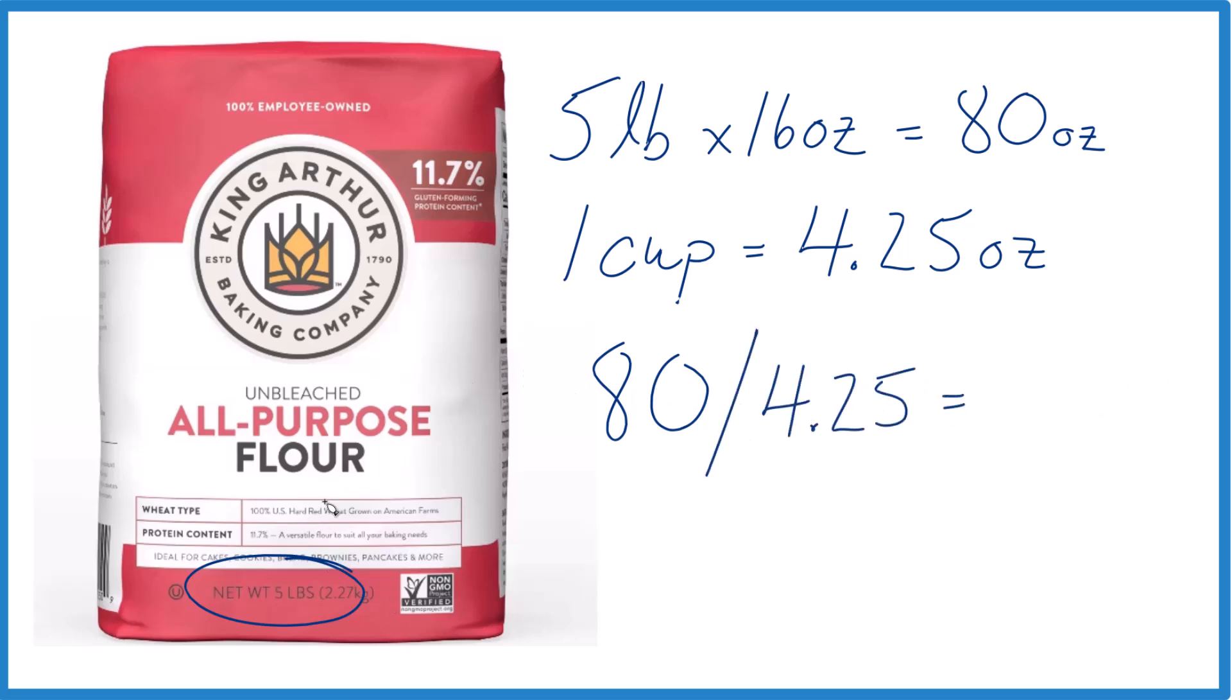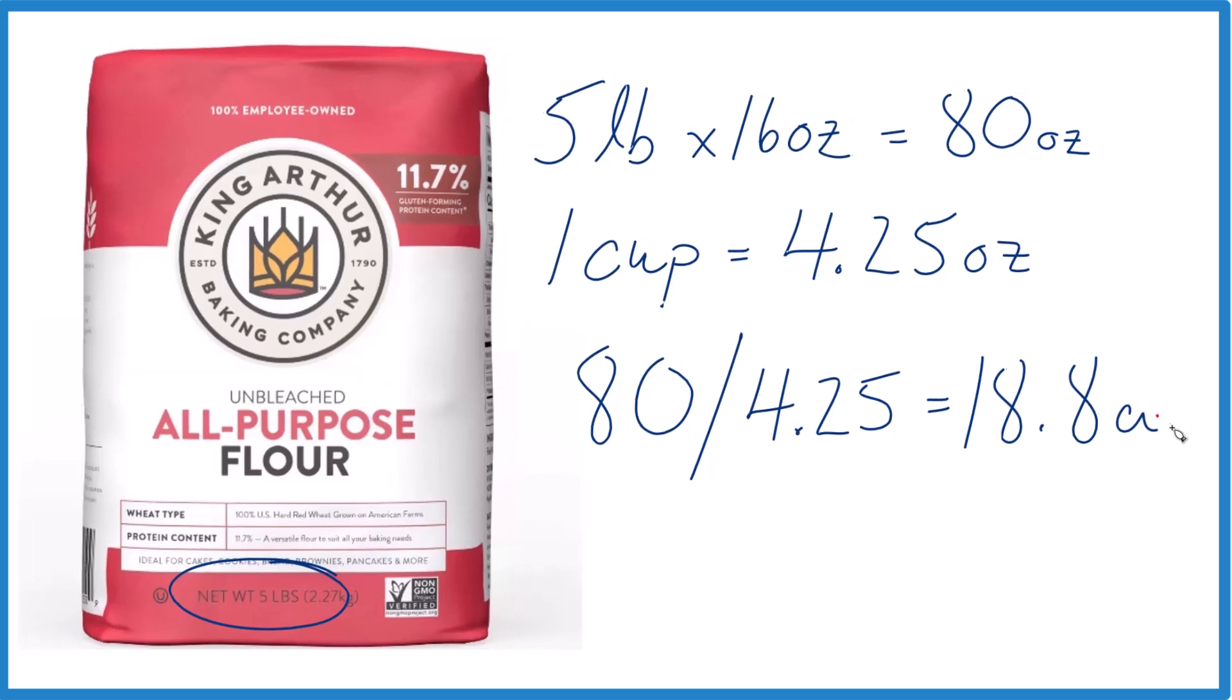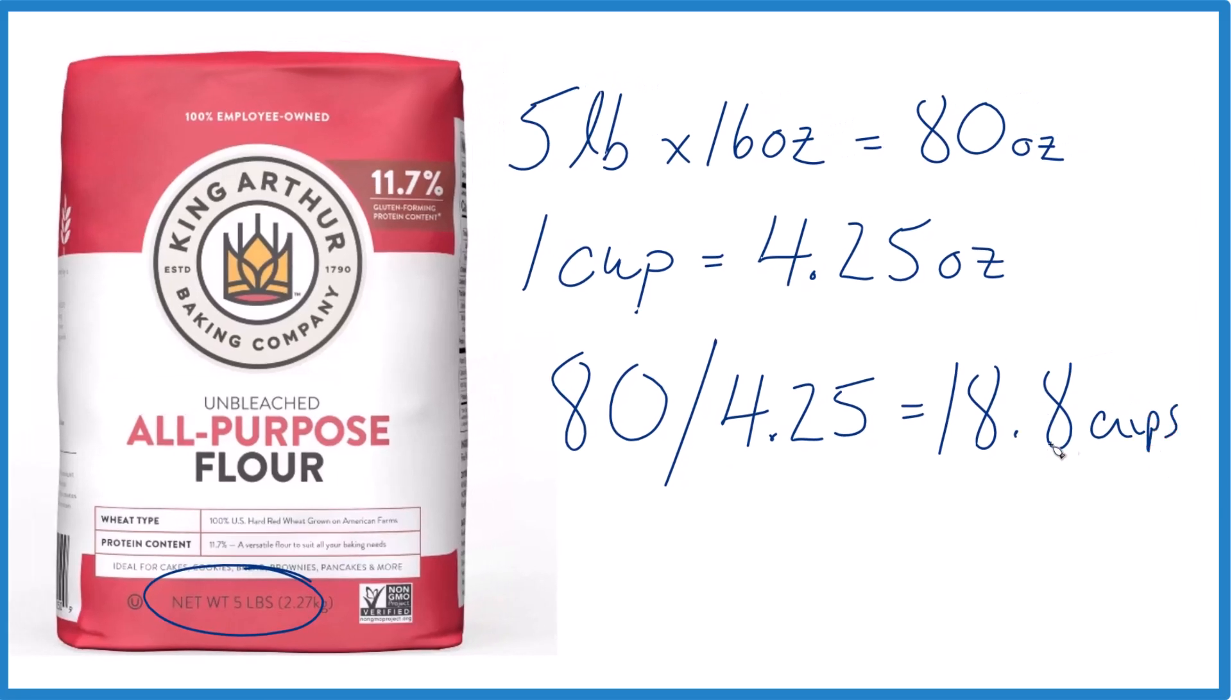80 divided by 4.25 is 18.82, let's call it 18.8. That's 18.8 cups in our five pound bag of all-purpose flour - almost 19 but not 19.